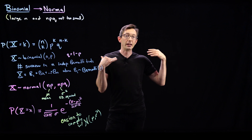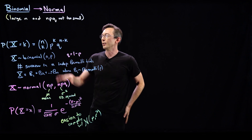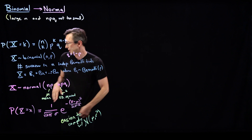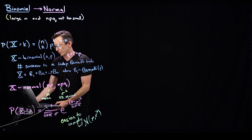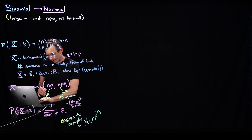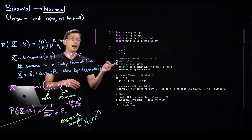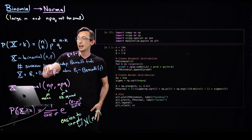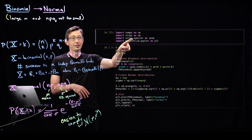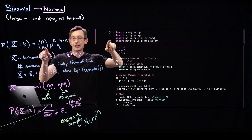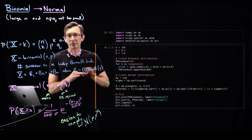Let's code this up and show visually that for large n, these two distributions look almost identical. We can also play around with n getting small, p getting small, and see what happens. I've already coded this up — you can download it yourself, reproduce it, or write it yourself. I'm going to import numpy, scipy — because the combinatorial function n choose k lives inside scipy's special module — and matplotlib for plotting.